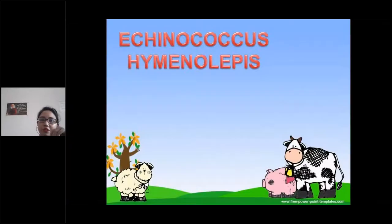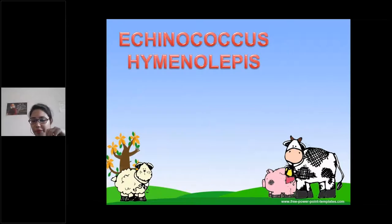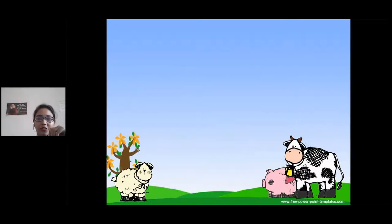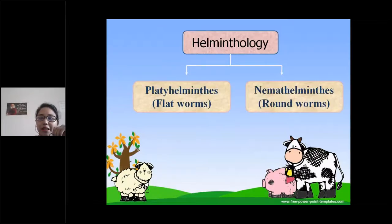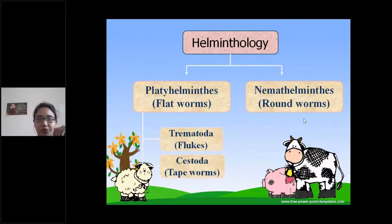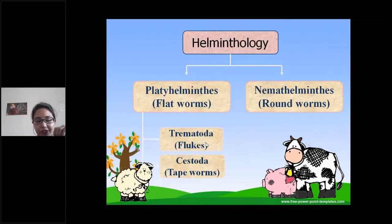Now we move to the PPT. Today's class is about Echinococcus and Hymenolepis, but first we'll summarize what was learned in the video. In helminthology, parasites are protozoa or helminths. Helminths are either platyhelminths — flatworms — or nemathelminths, which are roundworms. Platyhelminths include trematodes, which are leaf-like flukes — flat, broad in the center, tapered at both ends.